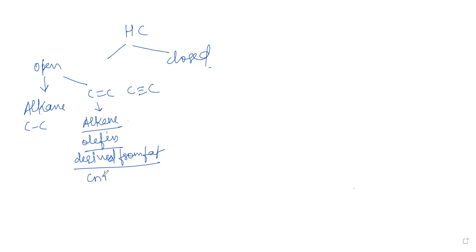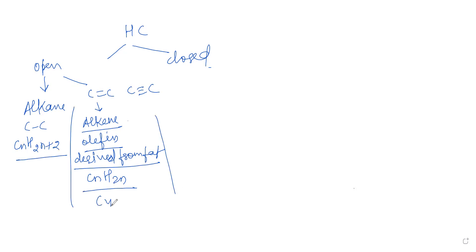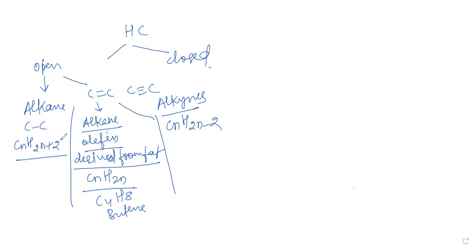The general formula of alkenes is CnH2n — compared to alkanes which are CnH2n+2. For example, C4H8 is butene. For alkynes, which have a carbon-carbon triple bond, the general formula is CnH2n-2. Alkynes are the most reactive among all aliphatic hydrocarbons.